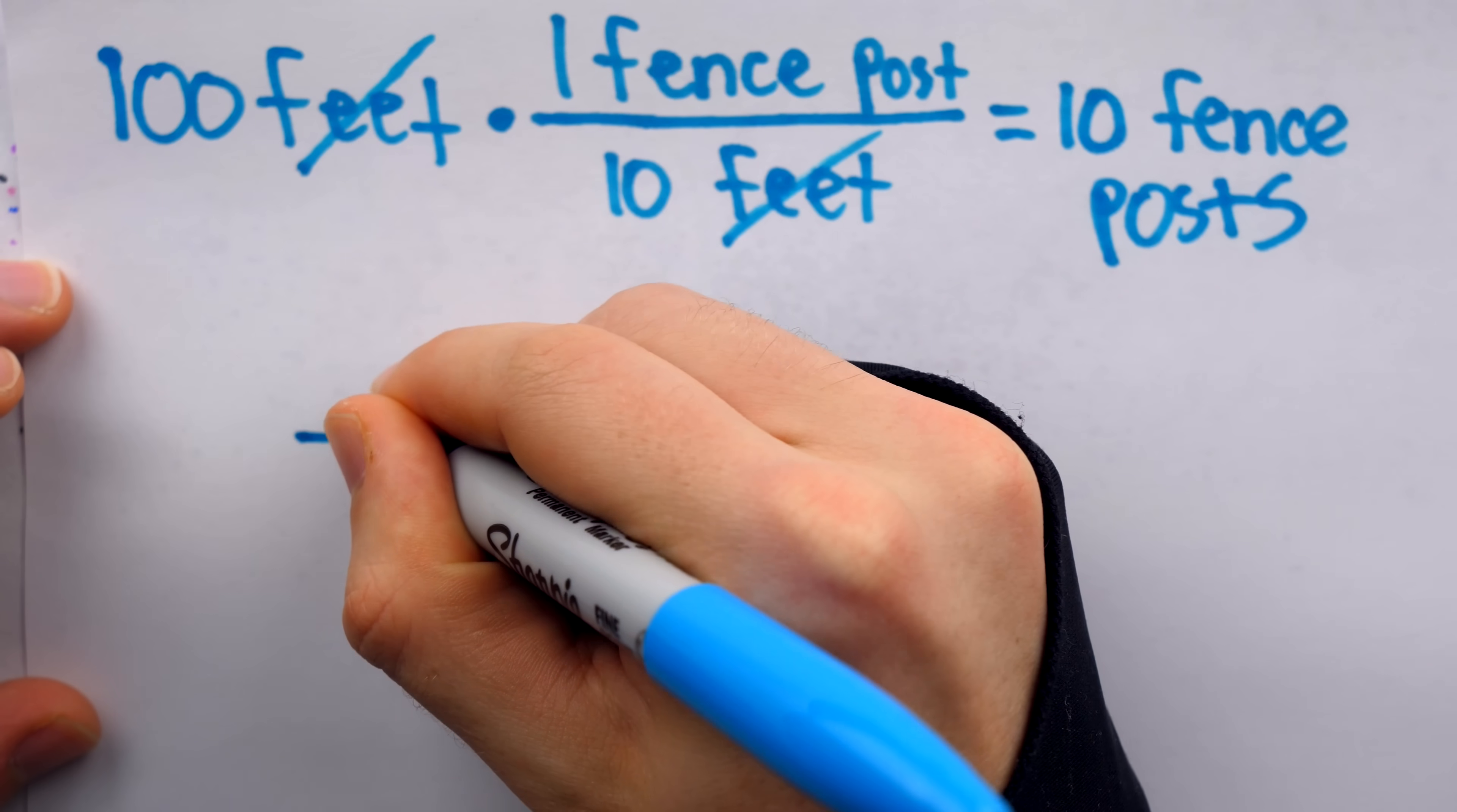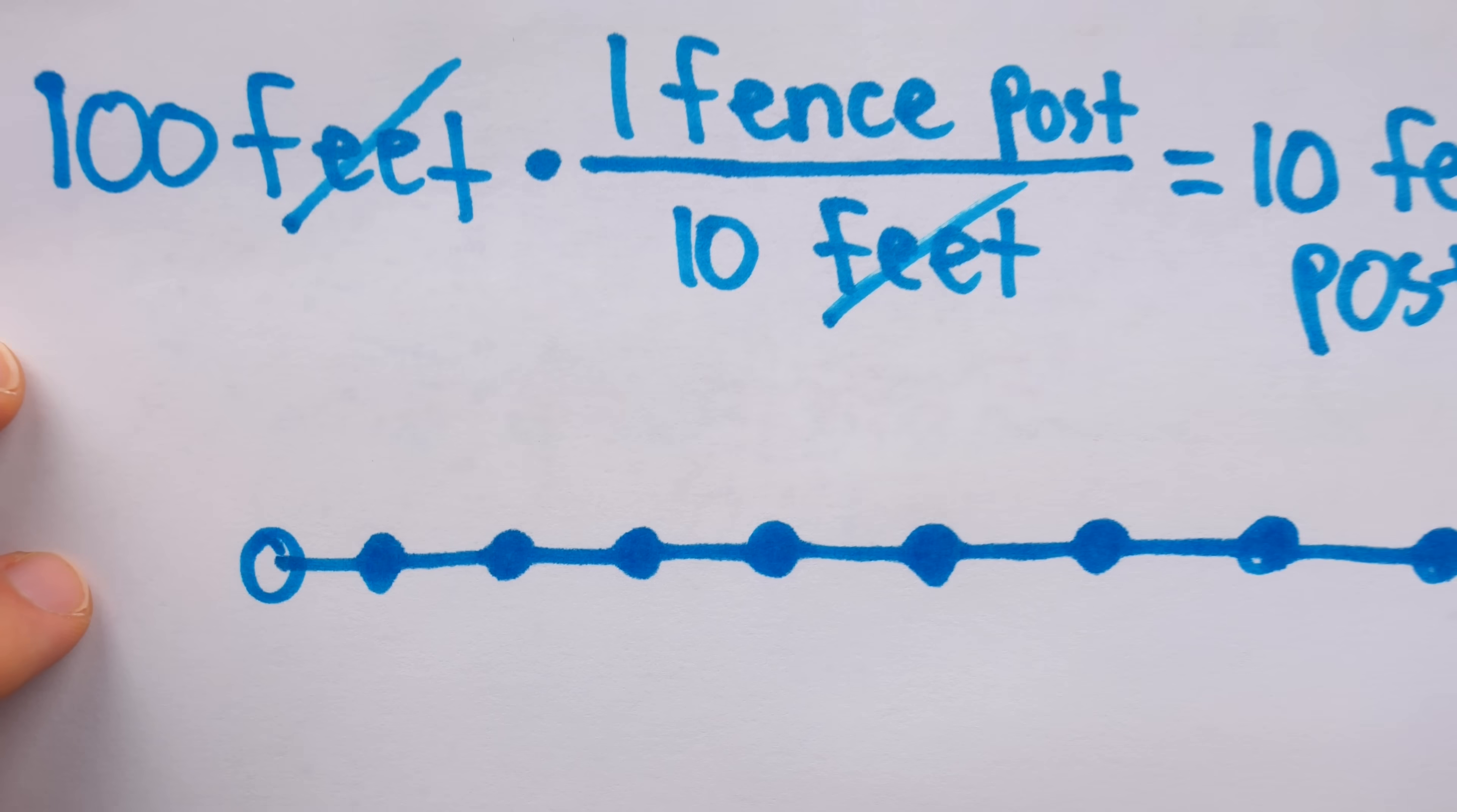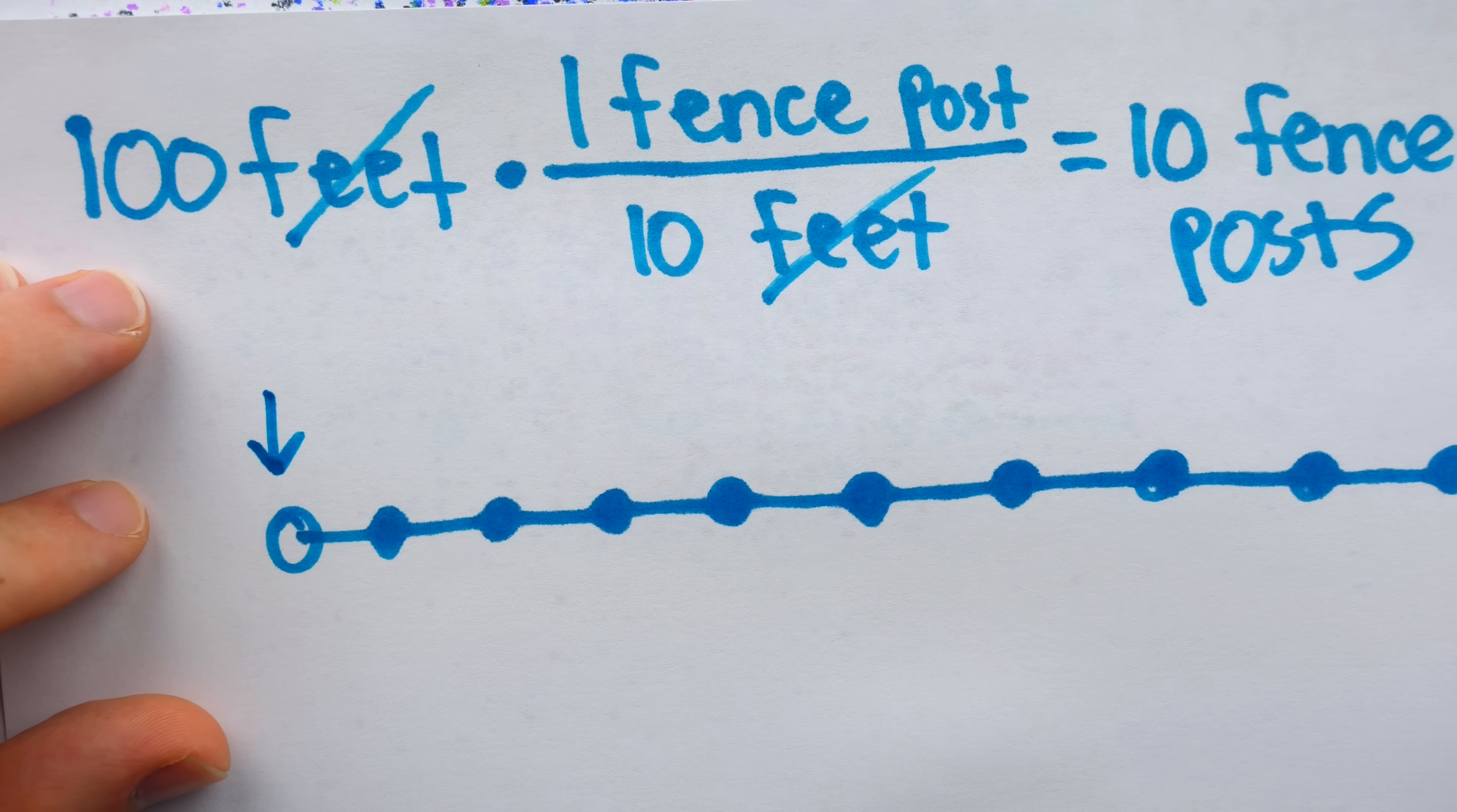But, of course, if you just sketch it out, you can see the error. Here's my long fence with 1, 2, 3, 4, 5, 6, 7, 8, 9, 10 fence posts. Clearly, we've neglected to include one at the start. And again, notice this isn't a computational mistake. It's true that 100 divided by 10 is 10. The issue is an error in the logic, which is, by necessity, off by one.